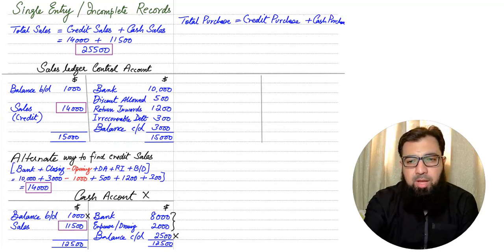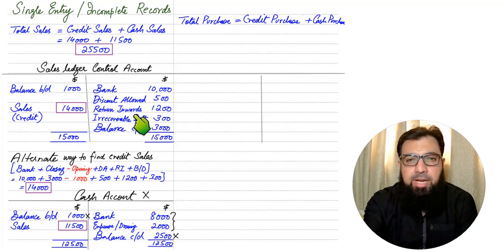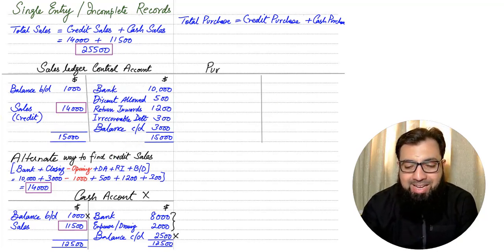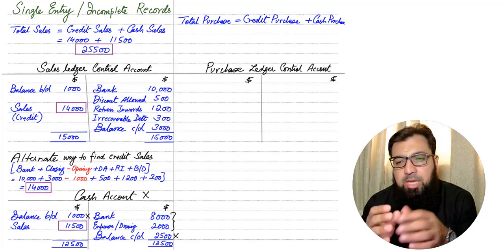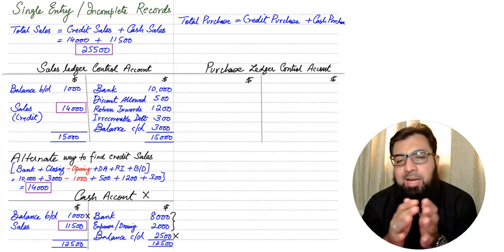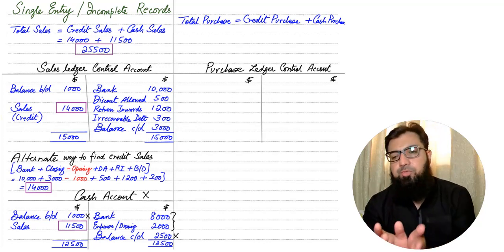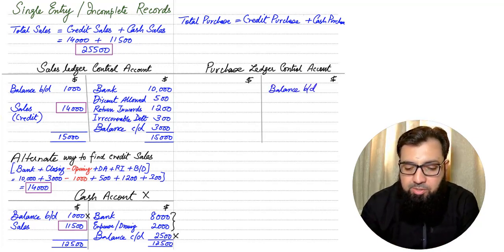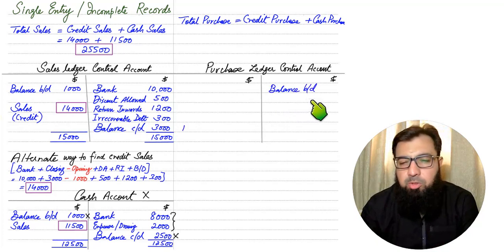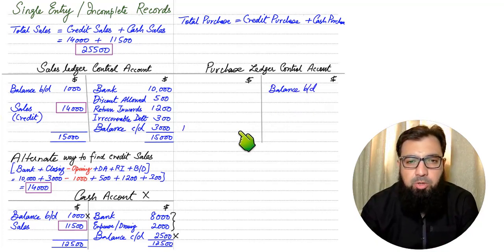When we calculated credit sales, we needed a Sales Ledger Control Account, which is basically a debtors account. Similarly, we now need to prepare a creditors account known as the Purchase Ledger Control Account (PLCA). The PLCA is essentially a suppliers account — an account for all of the creditors of the business. As creditors are a liability, the nature of liability is credit, so the opening balance comes on the credit side.